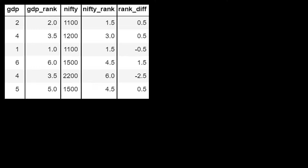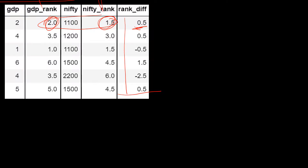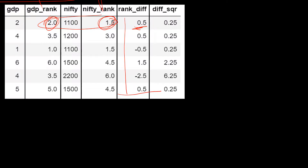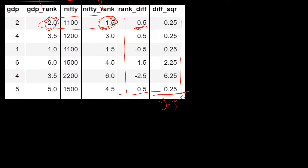The next step is to find the difference between both sets of ranks that we just created. So we find the difference between the two rank columns — for example, 2.0 minus 1.5 equals 0.5, and so on. Then we take the squared value of each difference: 0.5 squared is 0.25. We do this for all rows and then take the sum of all squared differences, which gives us 9.5.